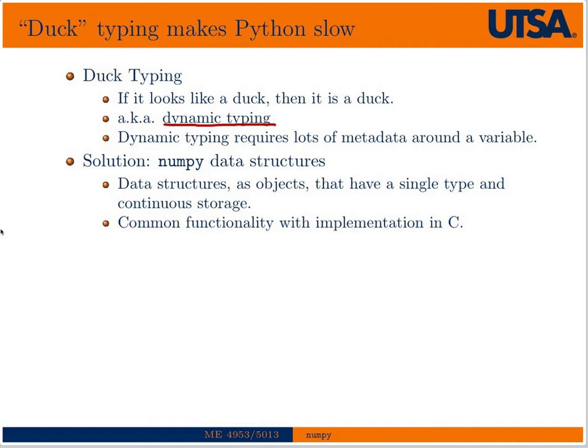So NumPy offers us a solution in that we get a set of data structures. They're also objects as well, but they have a single type and continuous storage. So the single type can actually be an object itself, but it could also be a 32-bit integer, a 64-bit float, a complex number, many things. Boolean values, true or false.